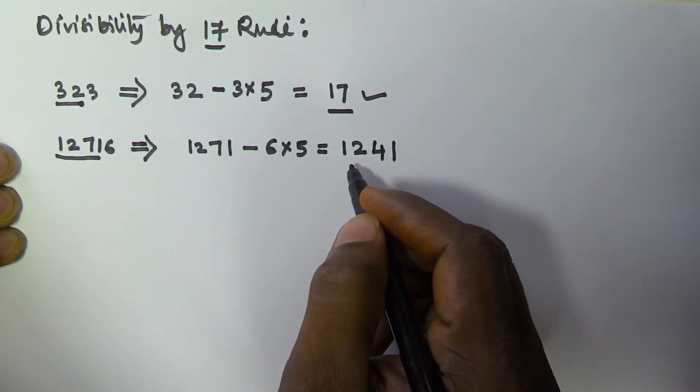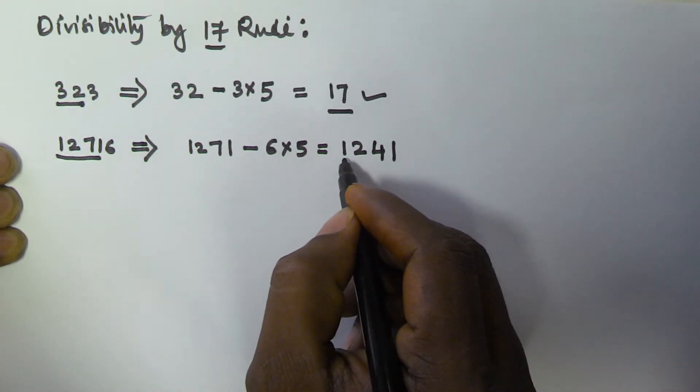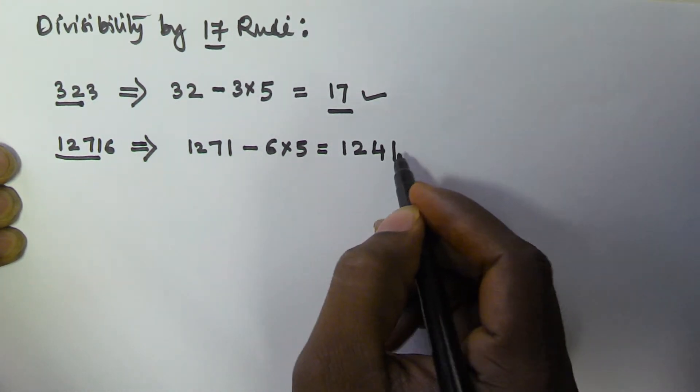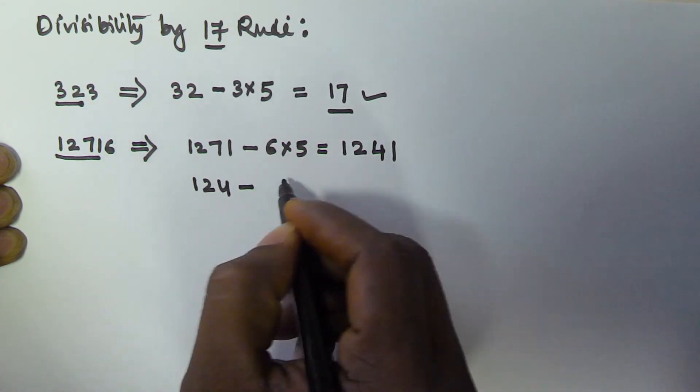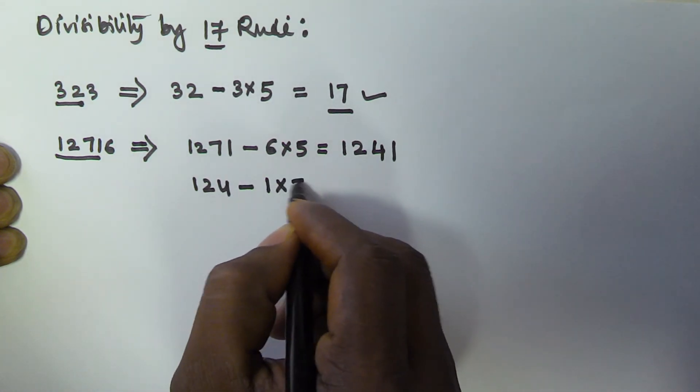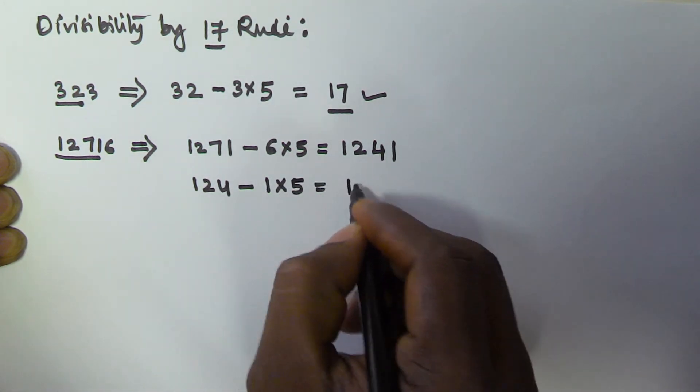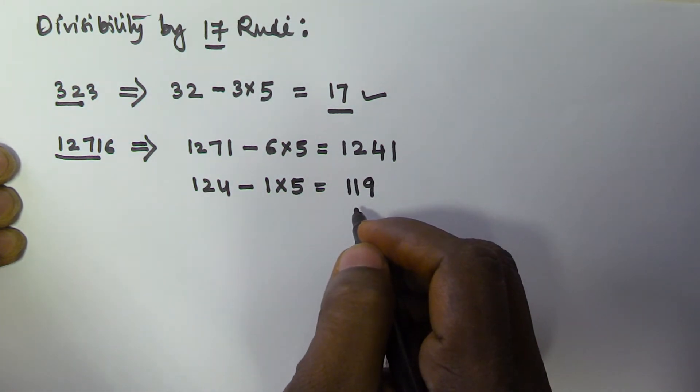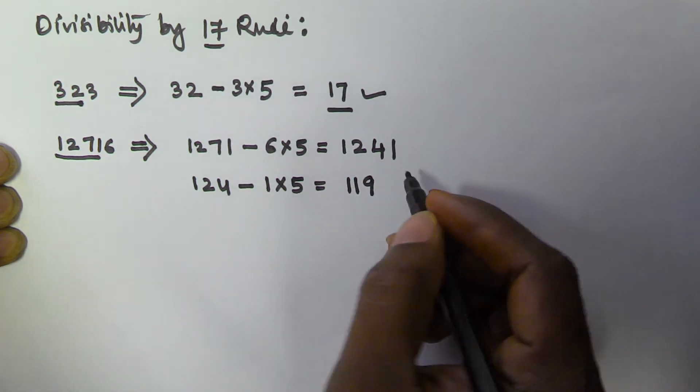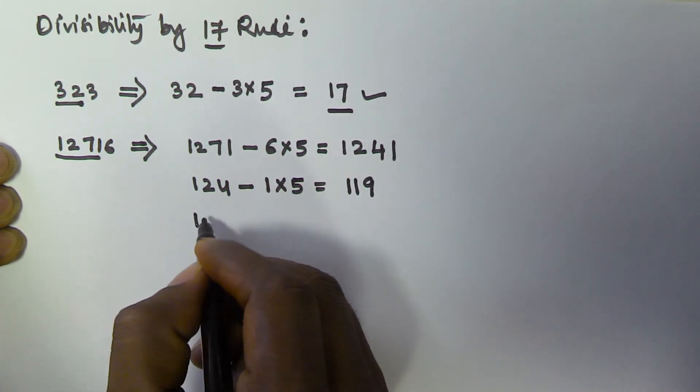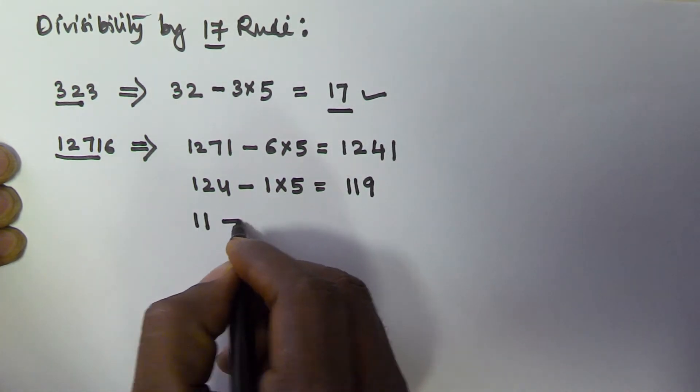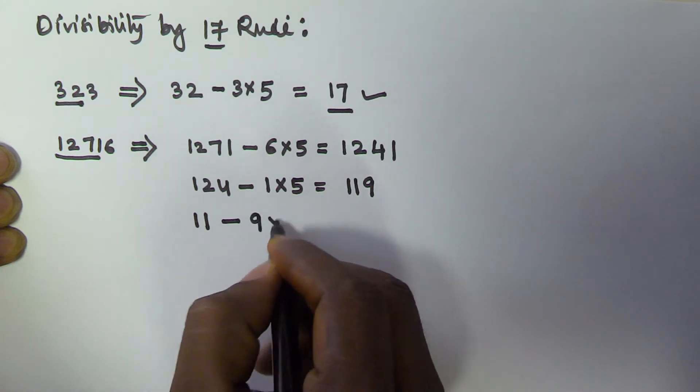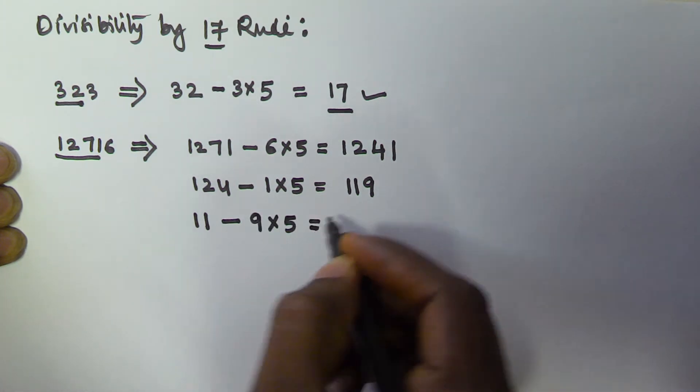From this number we take all the digits except the unit digit, that is 124, minus the unit digit times 5, which equals 119. Applying the rule again: 11 minus 9 times 5 equals negative 34.